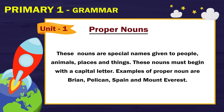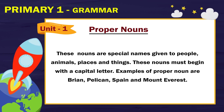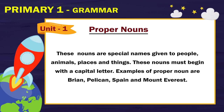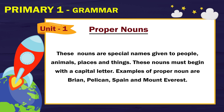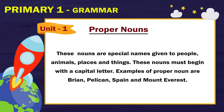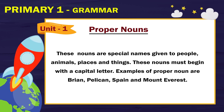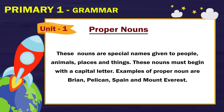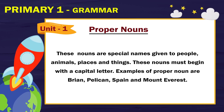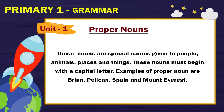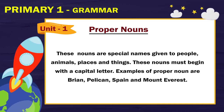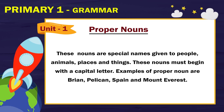Proper nouns: these nouns are special names given to people, animals, places and things. These nouns must begin with a capital letter. Examples of proper nouns are Brian, Pelican, Spain, and Mount Everest.